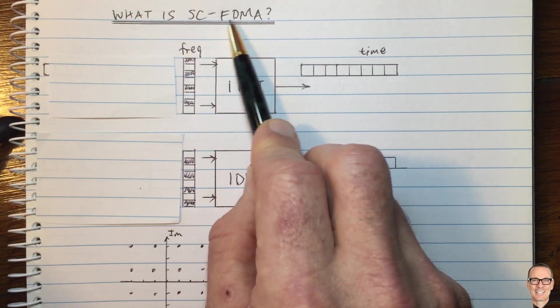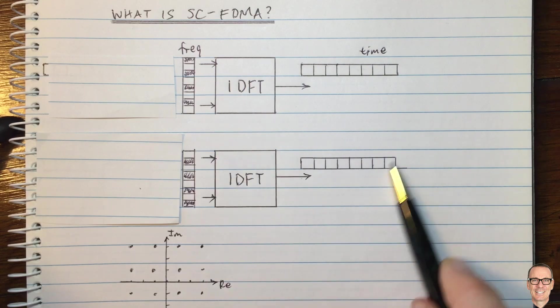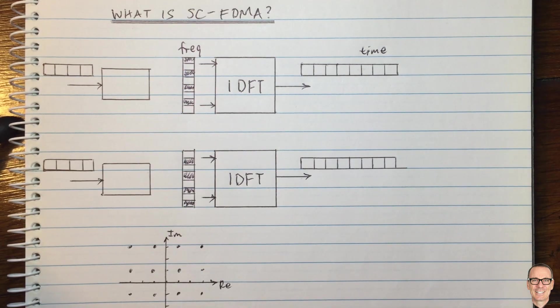So what can you do on the uplink? And this is where SCFDMA comes in. Effectively, what you are doing is OFDM, but with some pre-coding.